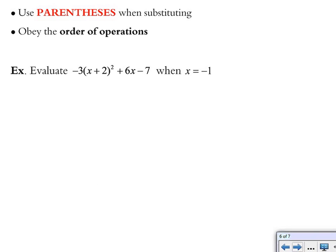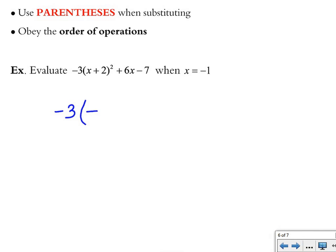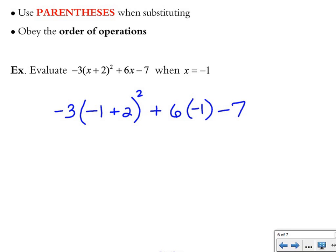Use parentheses when substituting, and always obey the order of operations. In a longer expression, replace every x with the given value — here it's negative 1. After replacing every x, do anything in parentheses first, then exponents, then multiplication and division, then addition and subtraction last. So we start by replacing x with negative 1: negative 3 is still out front, there are already parentheses around one term, and then minus 7. Now the whole expression is just numbers with no variables.